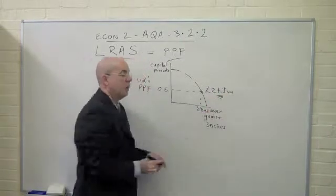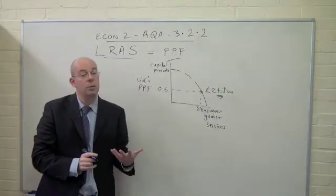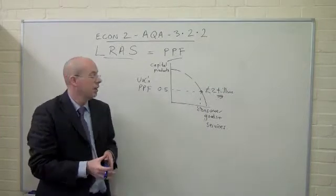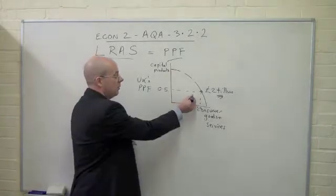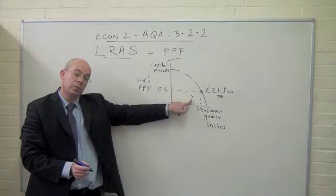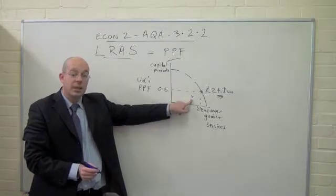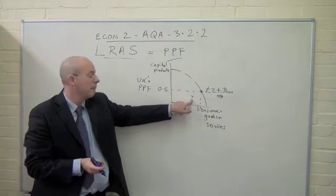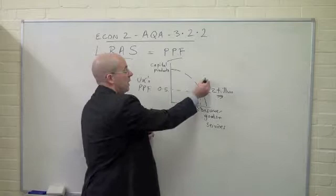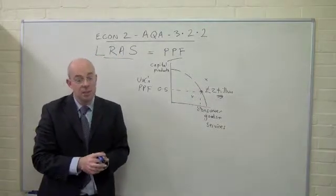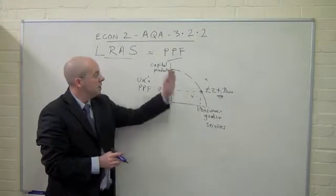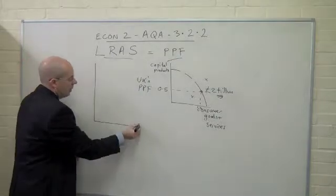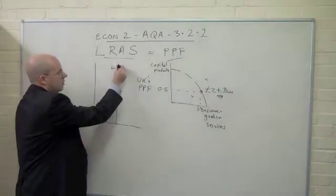We're saying here that we've got a 2 trillion pounds economy if we have everyone in full employment, all our businesses and factories running at full capacity. We have full employment here. We're not in a situation inside the PPF where we'd say we have spare capacity, idle resources, people being unemployed — people who are willing and able to work. Nor have we got a situation out here which we'd say is unobtainable given our current resources. So this idea of the PPF is what we're showing when we talk about the long-run aggregate supply curve.